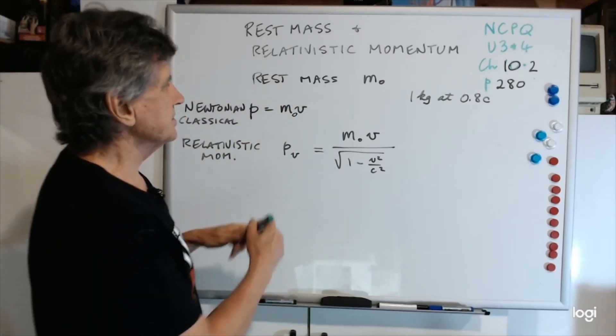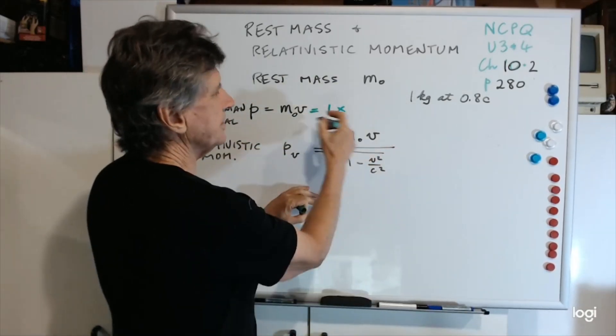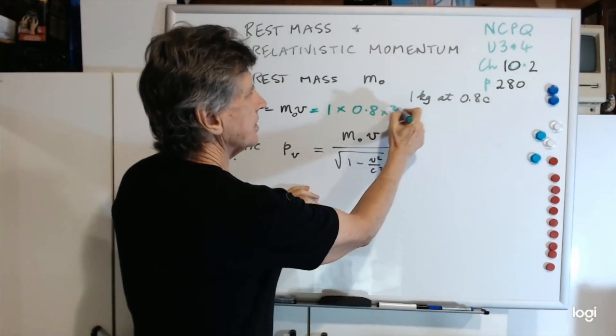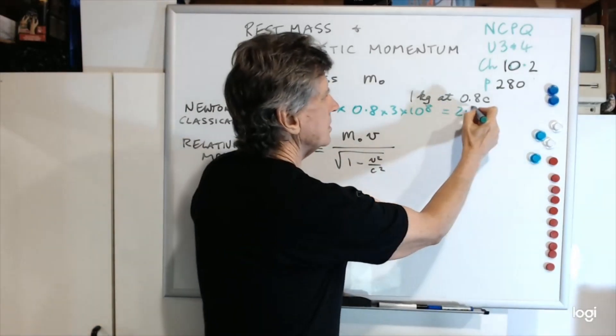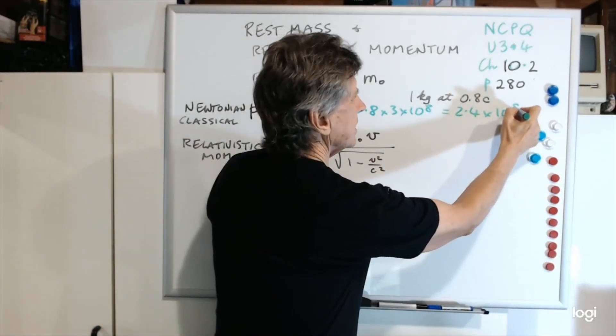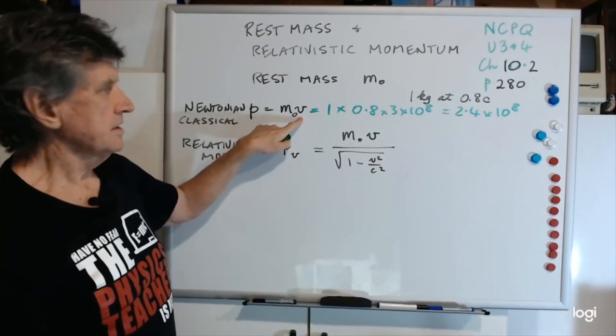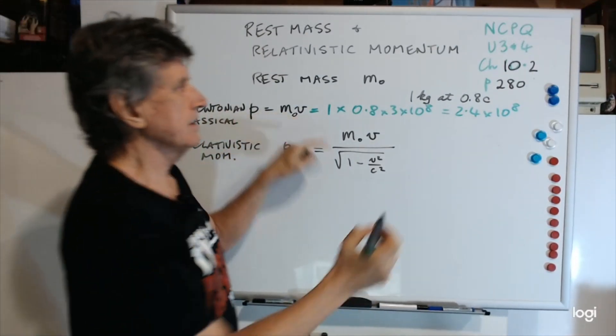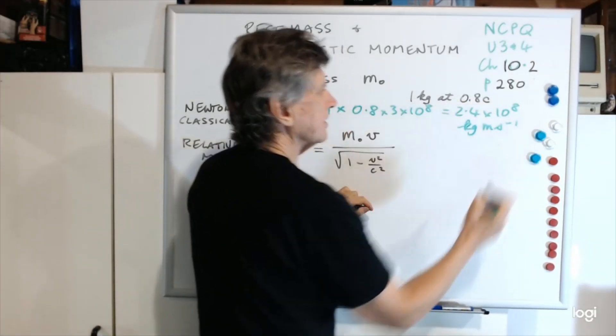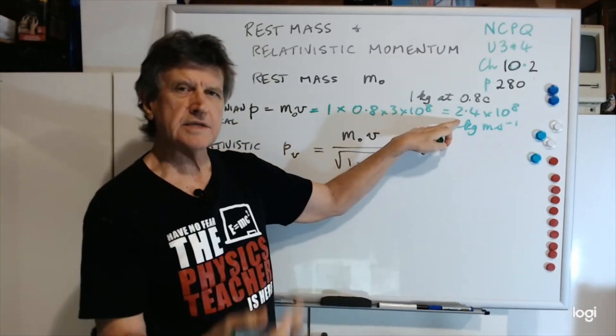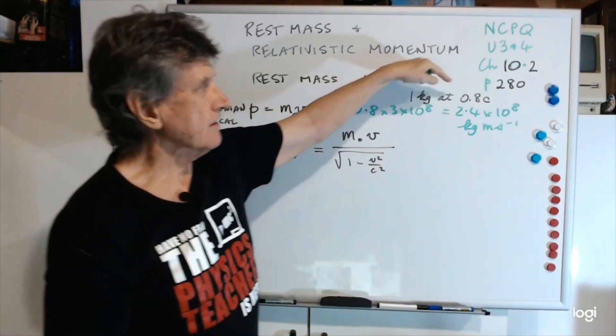It's just 1 kilogram times v, which is 0.8 times 3 by 10 to the 8. Now that's 2.4 by 10 to the 8. The units for momentum are kilograms meter seconds to the negative 1. So that's the Newtonian, or classical momentum, of a 1 kilogram object travelling at 0.8c.